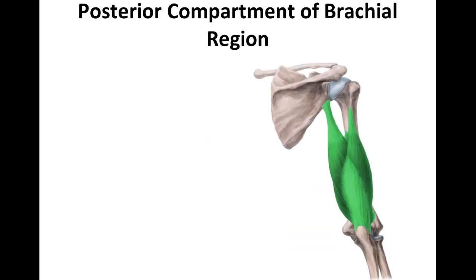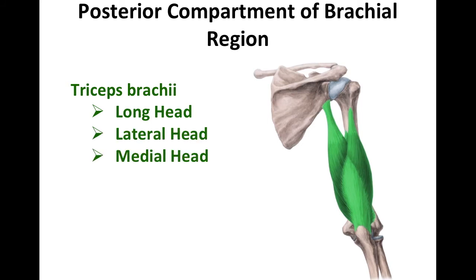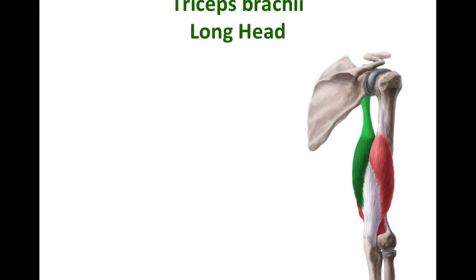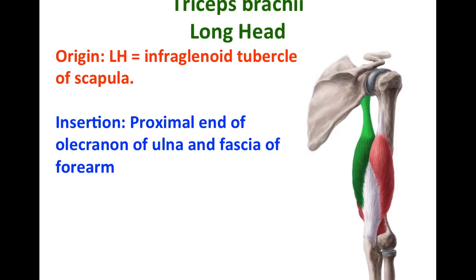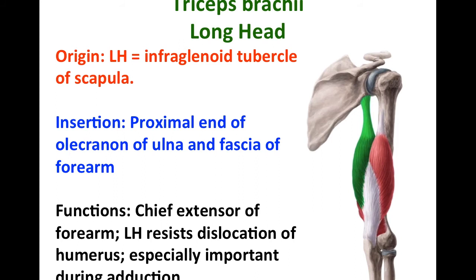Next, we're going to take a look at the muscles of the posterior compartment of the brachial region. This muscle is called the triceps brachii. Tri means three, so there are three heads: the long head, lateral head, and medial head. The point of origin for the long head is the infraglenoid tubercle of the scapula. It inserts on the proximal end of the olecranon of the ulna and the fascia of the forearm. This muscle is the chief extensor of the forearm. The long head resists dislocation of the humerus, and is especially important during adduction.